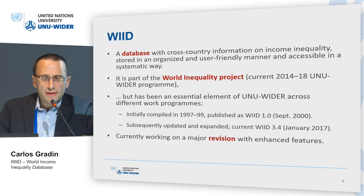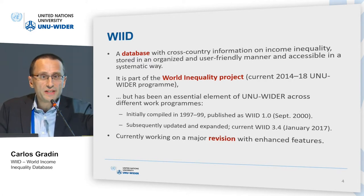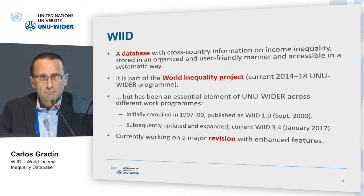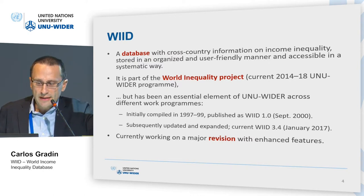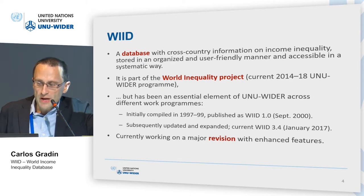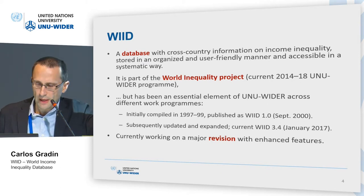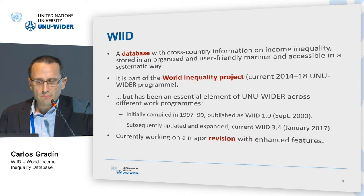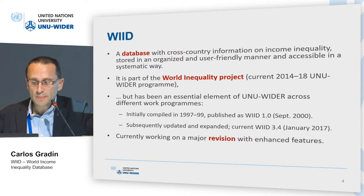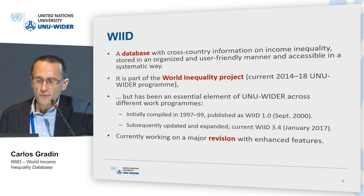Following Deininger and Squire's compilation of inequality — Gini, or population income or consumption shares for many countries — this database, the World Income Inequality Database (WIID), was constructed and held here at WIDER. It is a database with cross-country information for income inequality, stored in an organized and user-friendly manner — basically an Excel file or a data file — quite accessible, so you can download it from the web or use the graphic tools available on the website. It is part of the current World Inequality Project in our WIDER program, and has been an essential element in many different work programs.